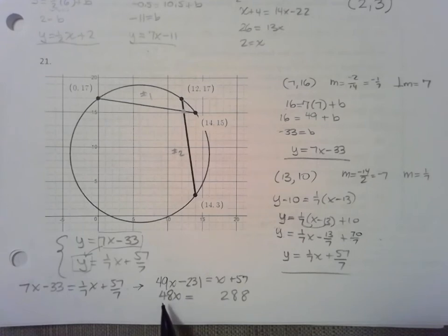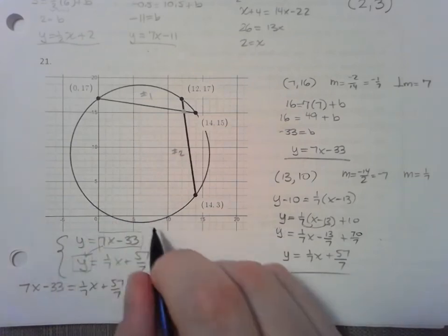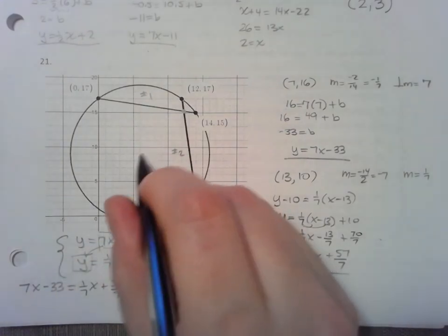Last step to find x, divide by 48. I think that's 6, 240 and 48, 288. Yep, x equals 6. So this tells us the x coordinate of my center is somewhere here, 6. To find the y coordinate, plug the x coordinate in and solve for y.